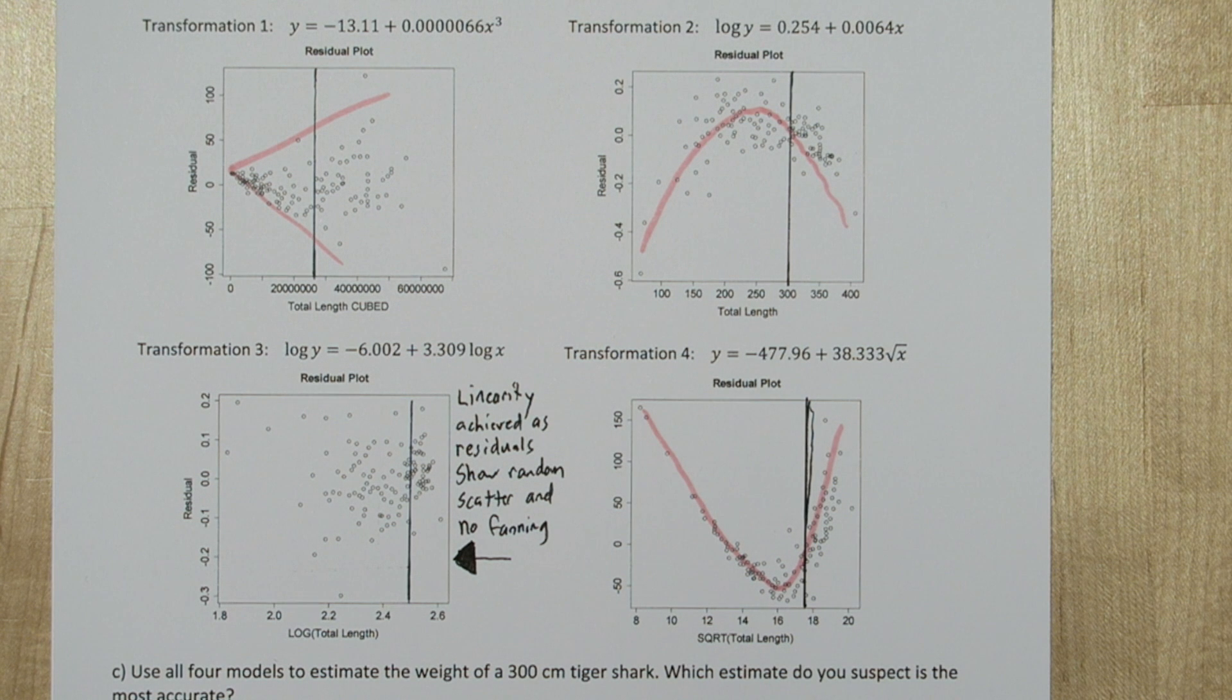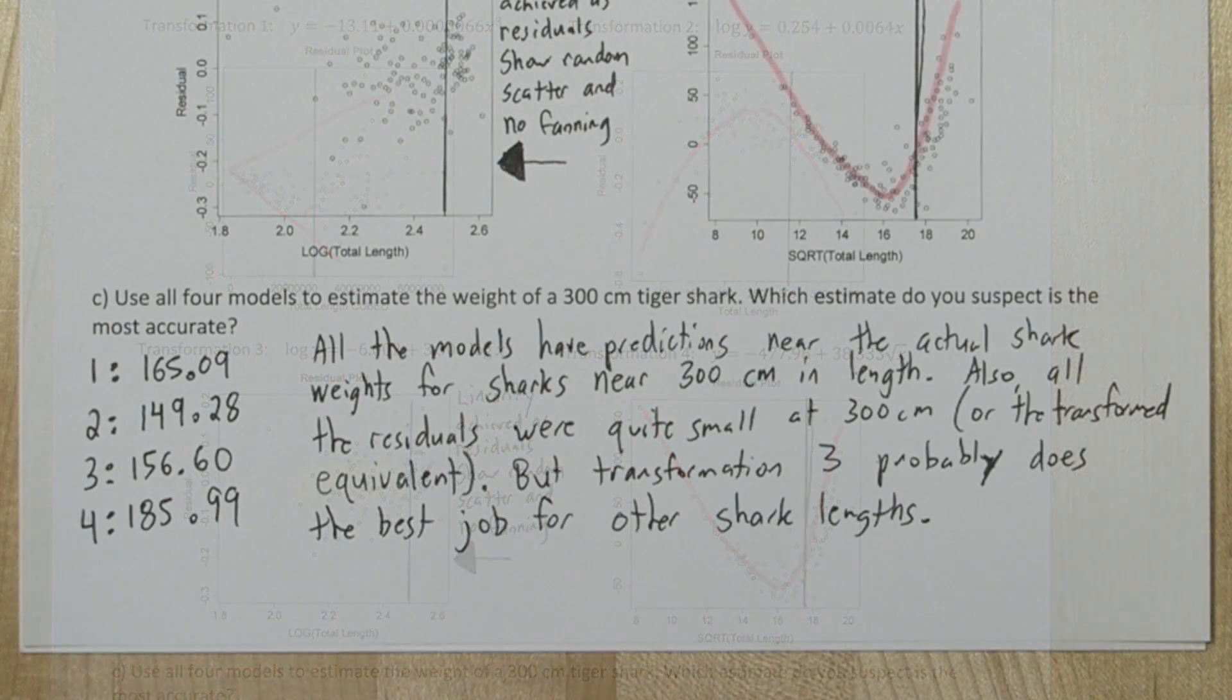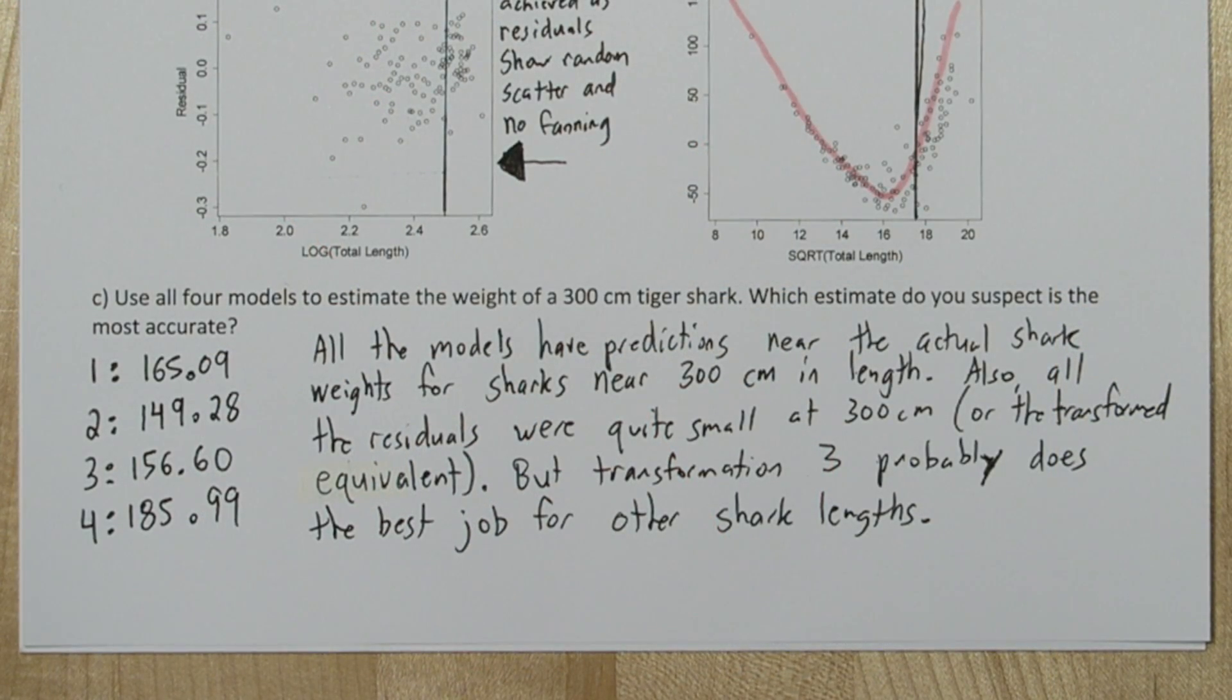I'd put my money on transformation 3, since that model seems to predict equally well throughout the shark lengths. So we'll say all the models have predictions near the actual shark weights for sharks that were near 300 cm in length. Also, the residuals were quite small at 300 cm, or the transformed equivalent. But transformation 3 probably does the best job for other shark lengths, not just the 300.